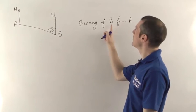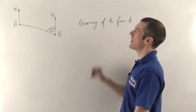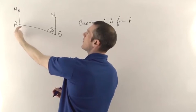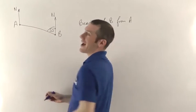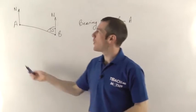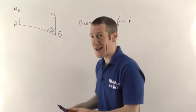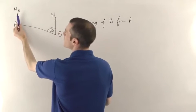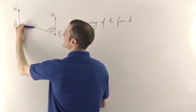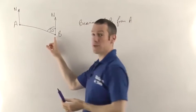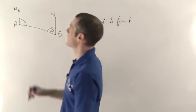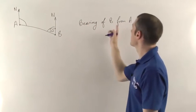The bearing of B from A: imagine you're standing at A and you want the direction of B. Bearings are always measured clockwise from north, so it's the angle from that point pointing north, going clockwise around to that direction — the direction pointing towards B. So we're trying to find this angle here — that would be the bearing of B from A.